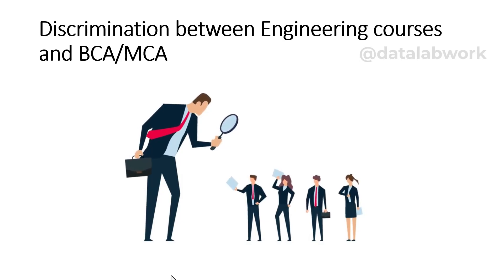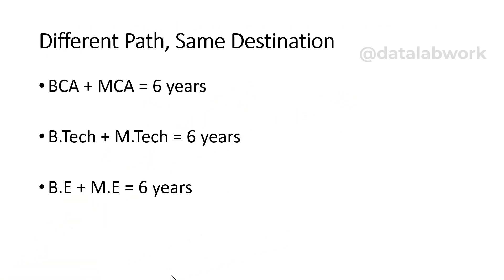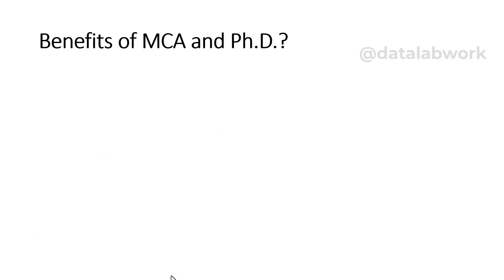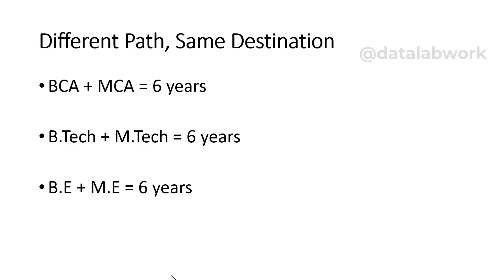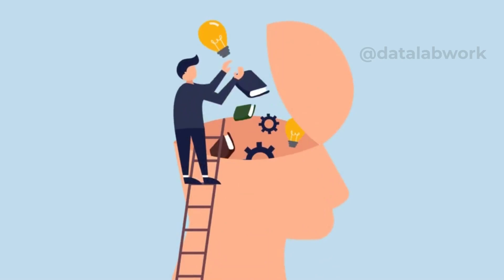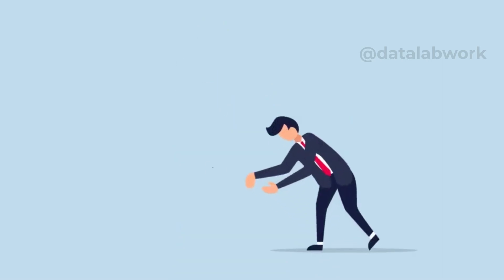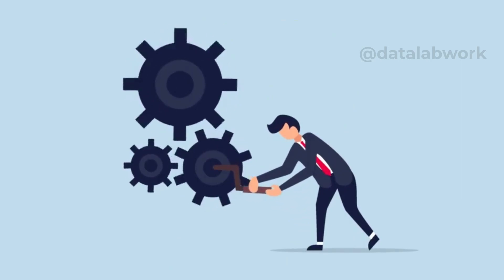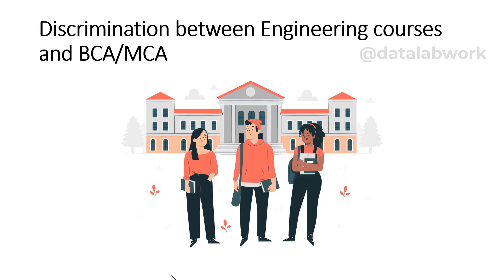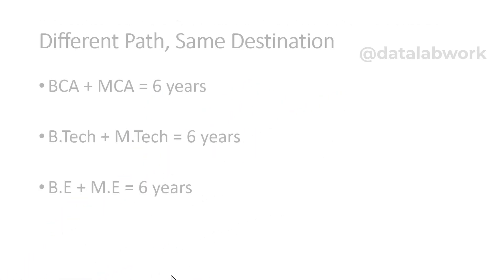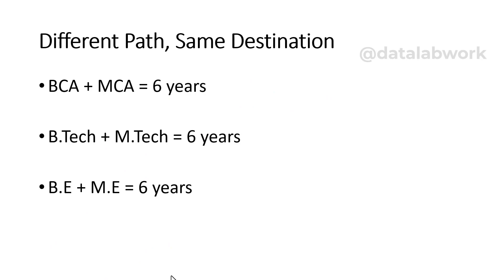One reason behind this perceived discrimination is the traditional hierarchy in academia, where engineering has always been placed a notch higher than other professional courses, influencing employer preferences to favor engineering graduates. But the industry is evolving — today employers are more interested in your skills, practical exposure, and ability to adapt rather than just your degree. Companies are increasingly recognizing the value BCA and MCA graduates bring, shifting hiring trends. Furthermore, the curriculum for BCA and MCA has been revamped in recent years to offer a more practical, hands-on approach valued in the tech industry.